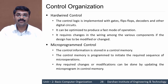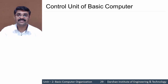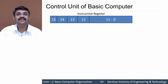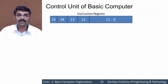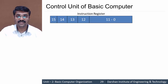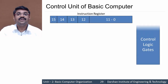In this session we will be discussing the hardware control organization of a basic computer. Before moving to that, we need to revise the instruction register. The instruction register is 16 bits in a basic computer. Bits 0 to 11 are for the address in memory reference instructions, register operations in register reference instructions, and I/O operations in IO instructions. Bits 12 to 14 are for the opcode, and the 15th bit is the I-bit, indicating direct or indirect addressing for memory reference instructions. That value is 0 for register reference instructions and 1 for IO instructions.